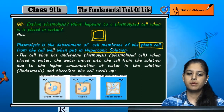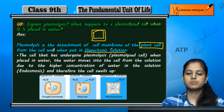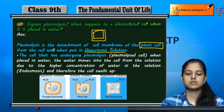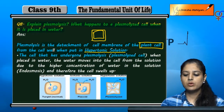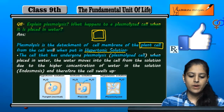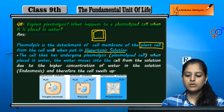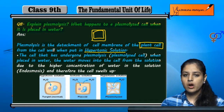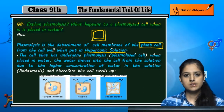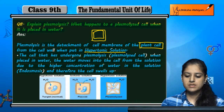Now, if we have a plasmolyzed cell — a cell that has already undergone plasmolysis — and it is placed in water, the water moves into the cell from the solution due to the higher concentration of water in the solution. This is called endoosmosis, and therefore the cell swells up.